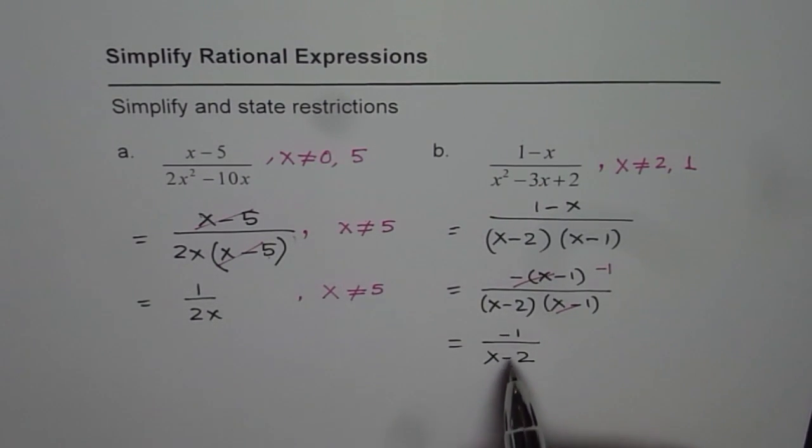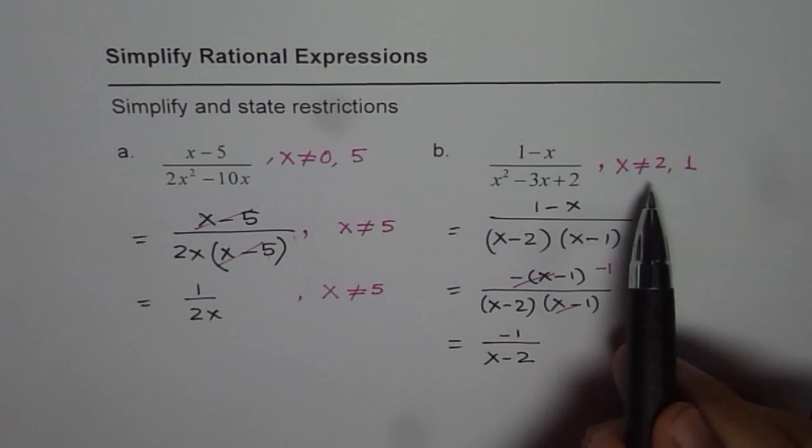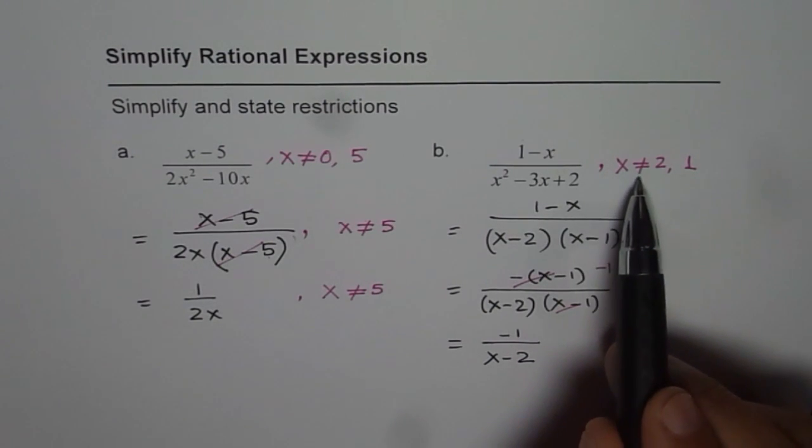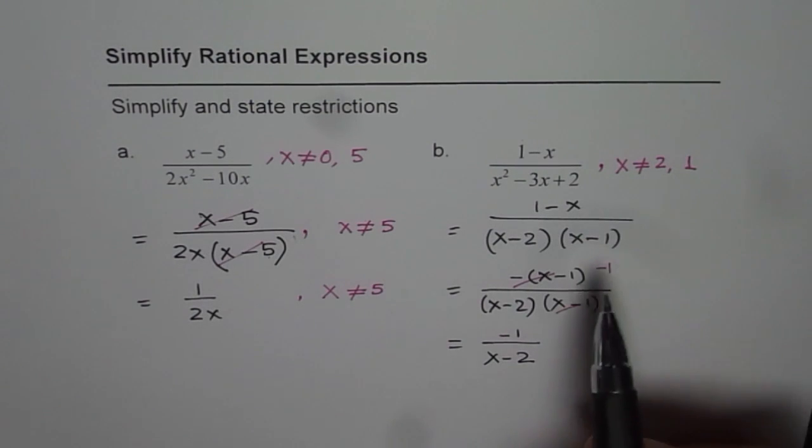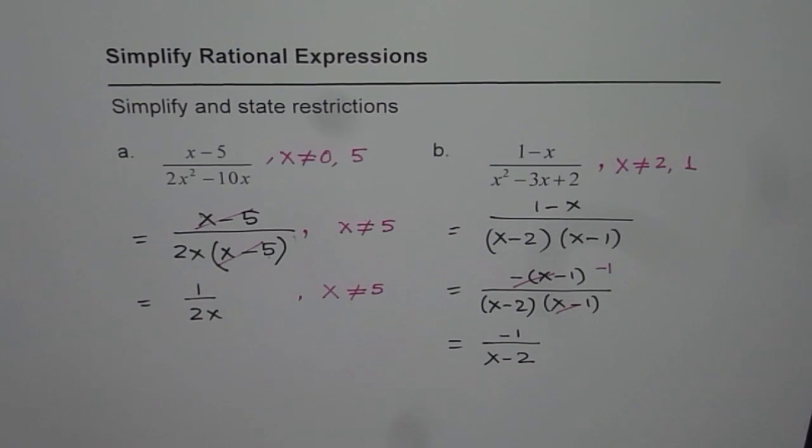So that is the simplified version with the restriction that x is not equal to 2 and x is not equal to 1. x can have any real numbers except for 2 and 1. I hope that makes things clear. Thank you.